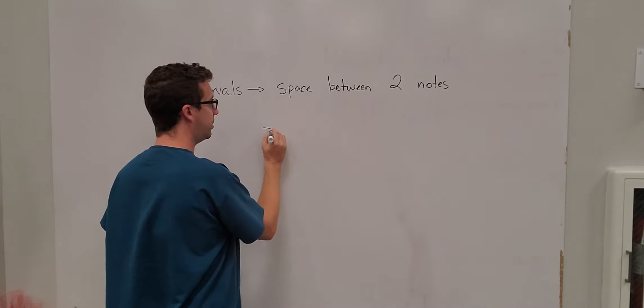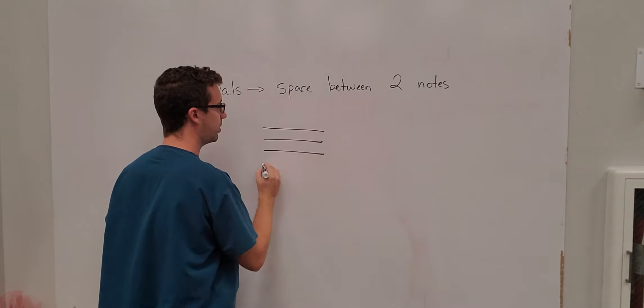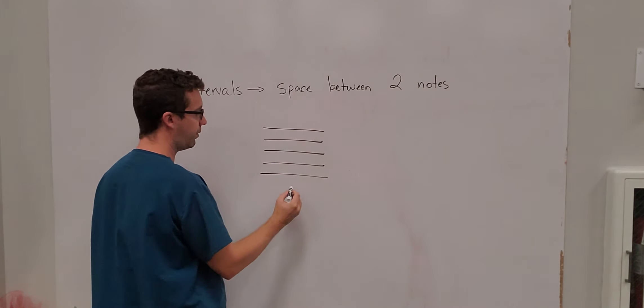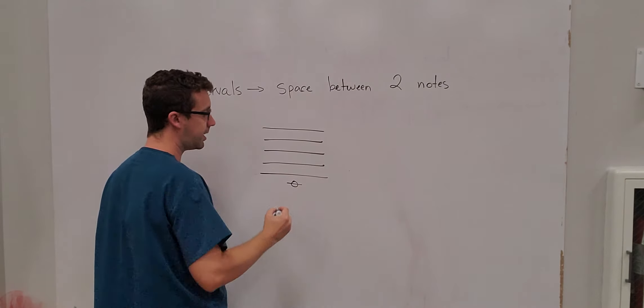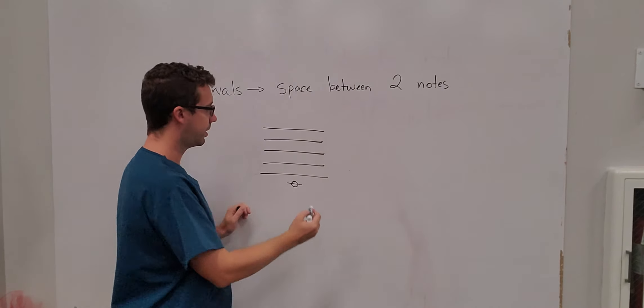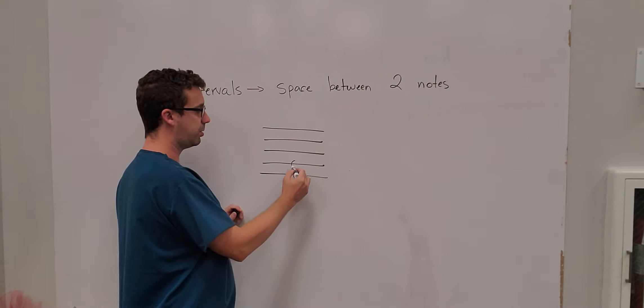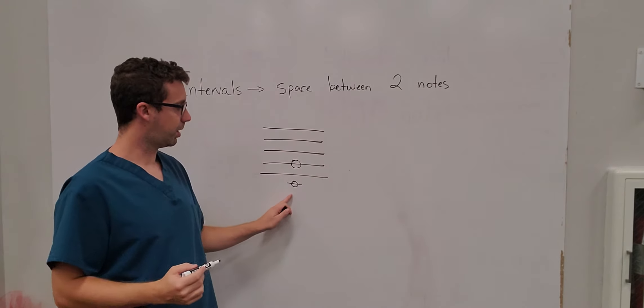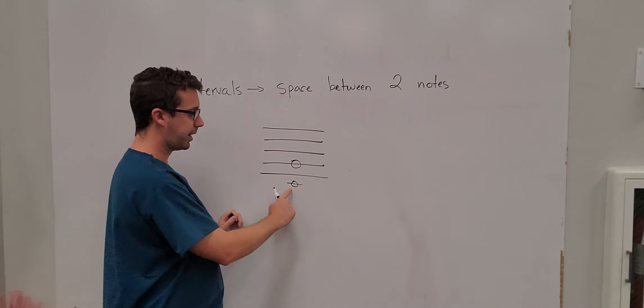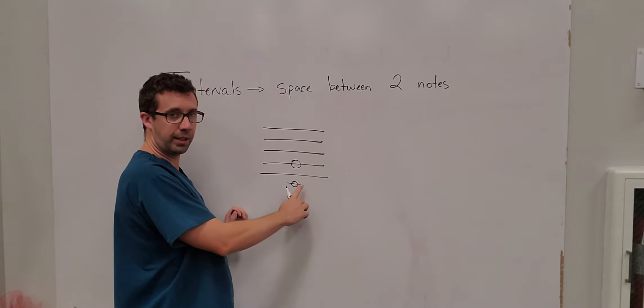The spacing between two notes from any note to any other note is a certain interval. So for example if we have a C down here and I want to know the spacing from C to G, all I do is I count up lines and spaces.